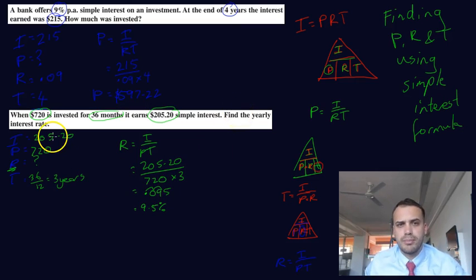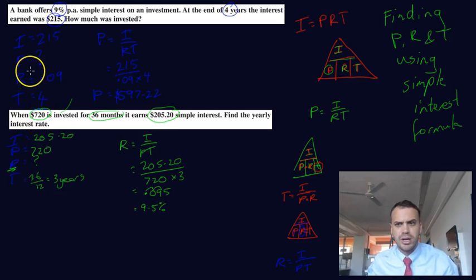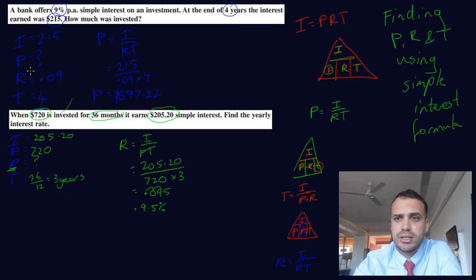Now I was going to run through one more example here. You can see we've done an example where we're finding P. We've done an example where we're finding R. I was going to run through one where we find T. But now that you know the triangle method, and now that you've got this nice little handy way of writing down each of your things, I think you can figure out T by yourself. Good luck. Do some questions. Make sure you're checking your answers and asking if you have any trouble. That's our finding P, R, and T using the simple interest formula.